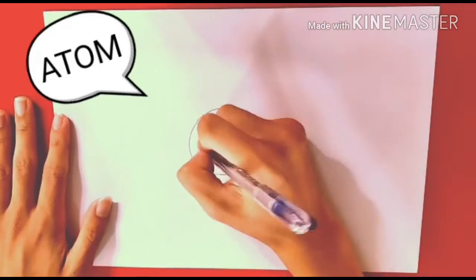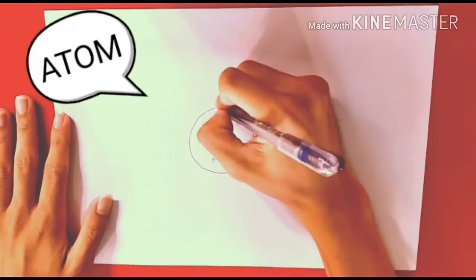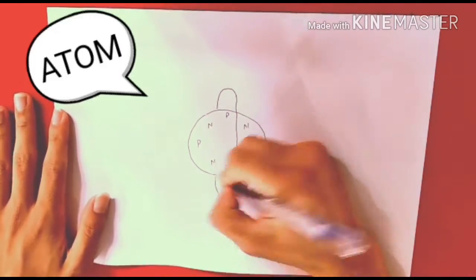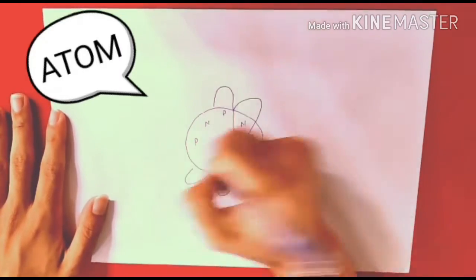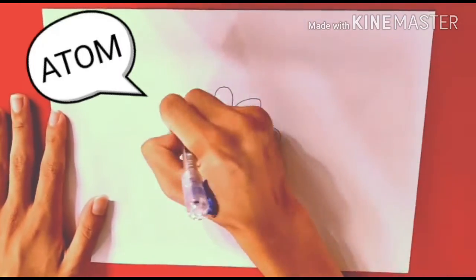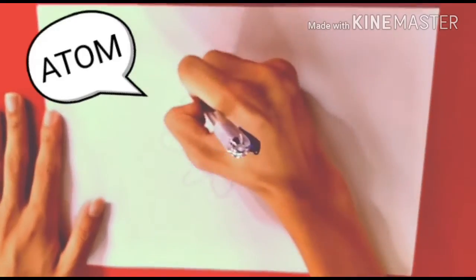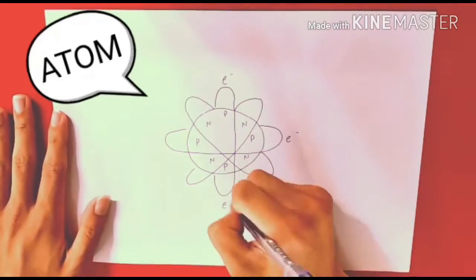As we know, everything in this world is made out of atoms. Atom is the smallest unit of a chemical element. It consists of a central nucleus which has protons, neutrons, and also a set of electrons that move around the nucleus.